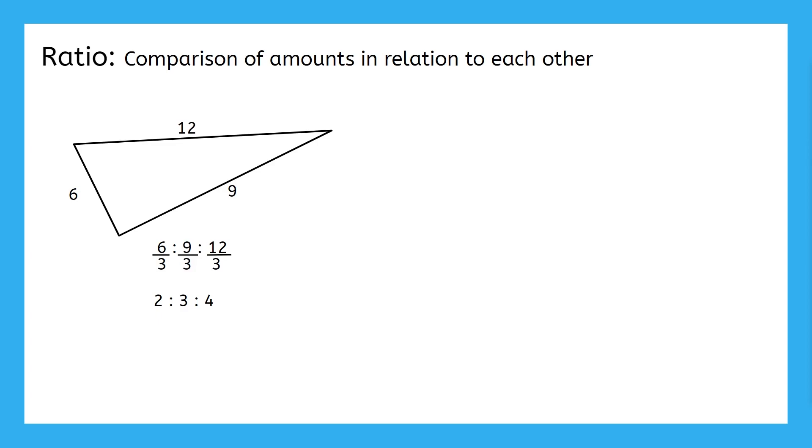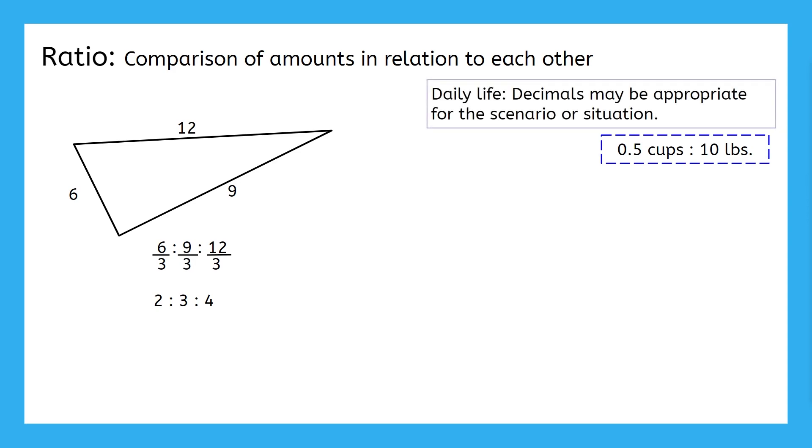Did you notice that in our dog food example, our ratio had a decimal in it, 0.5 cups of dog food for every 10 pounds of weight? Many times in real, day-to-day uses of ratios, we do have decimals in our ratios. In the dog food example, it makes sense to have the ratio simplified like that because it makes it easier for people with small dogs to calculate a serving size.